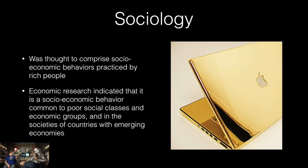Sociology. This was thought to comprise socioeconomic behaviors practiced by rich people, but economic research indicated that it is actually a socioeconomic behavior common to poor social classes and economic groups, and in societies of countries with emerging economies. This is where you see diamond-covered everything — like the golden MacBook pictured here. It seems so opulent, but you'll never catch somebody with actual money bopping around with one of those. It sticks out like a sore thumb, in the exact same way that big chrome rims do. Across all cultures, the aspirant, the rising, tend to have great displays of opulence.